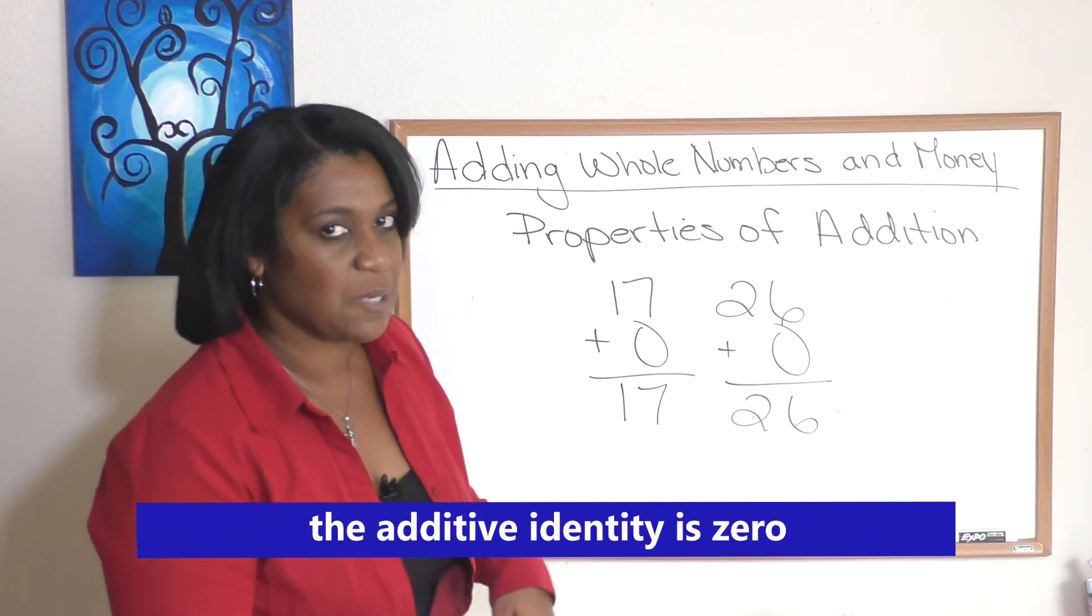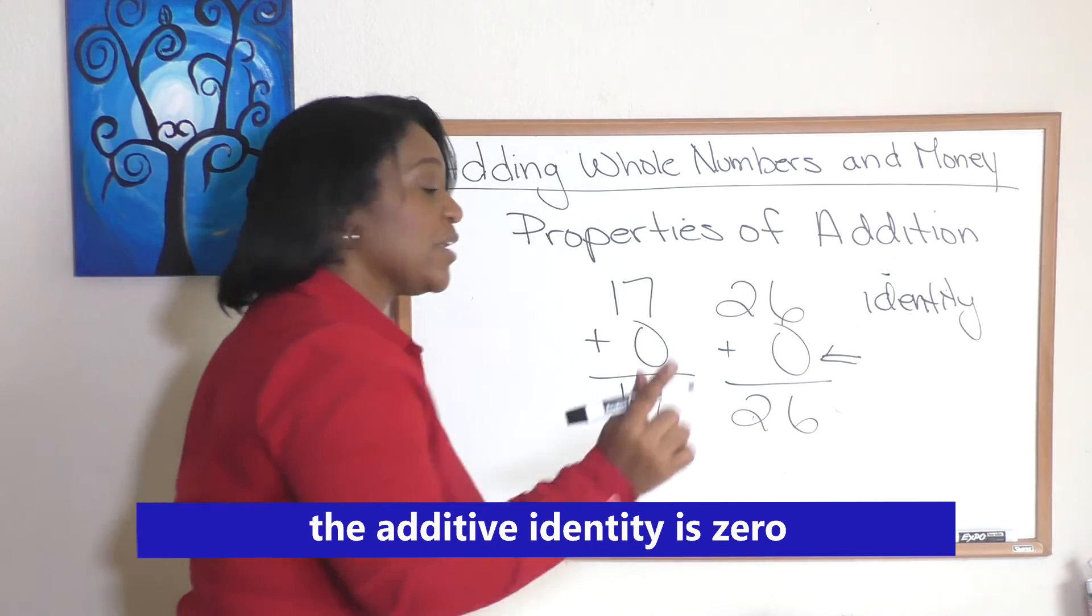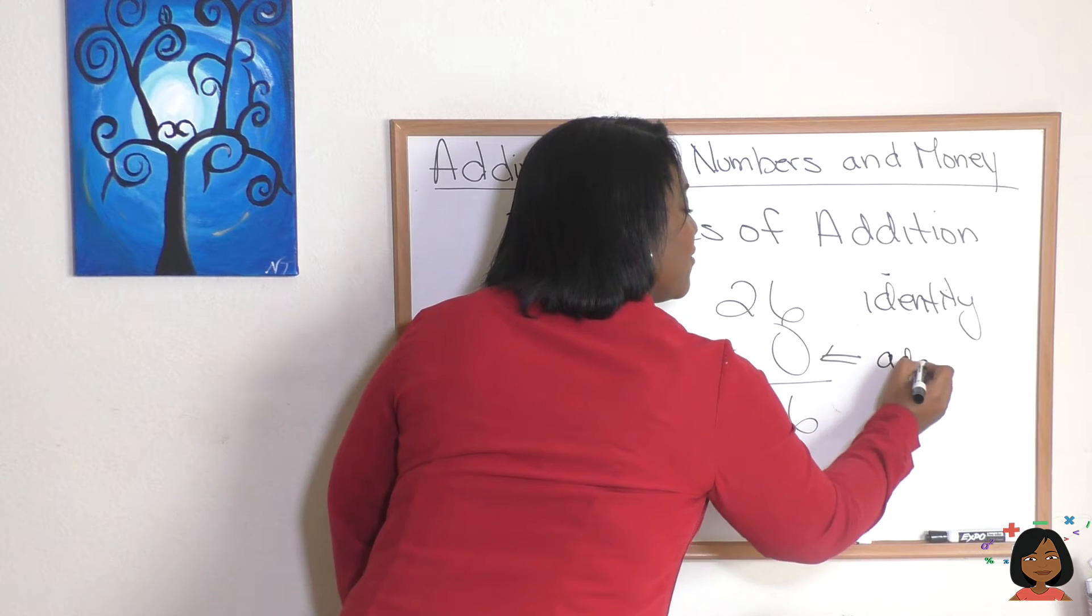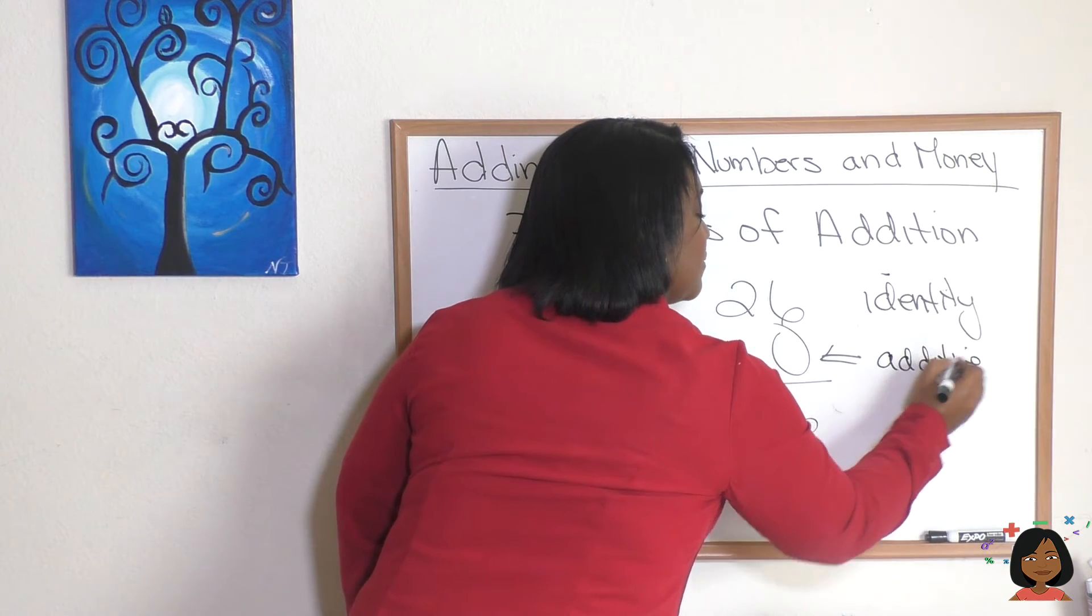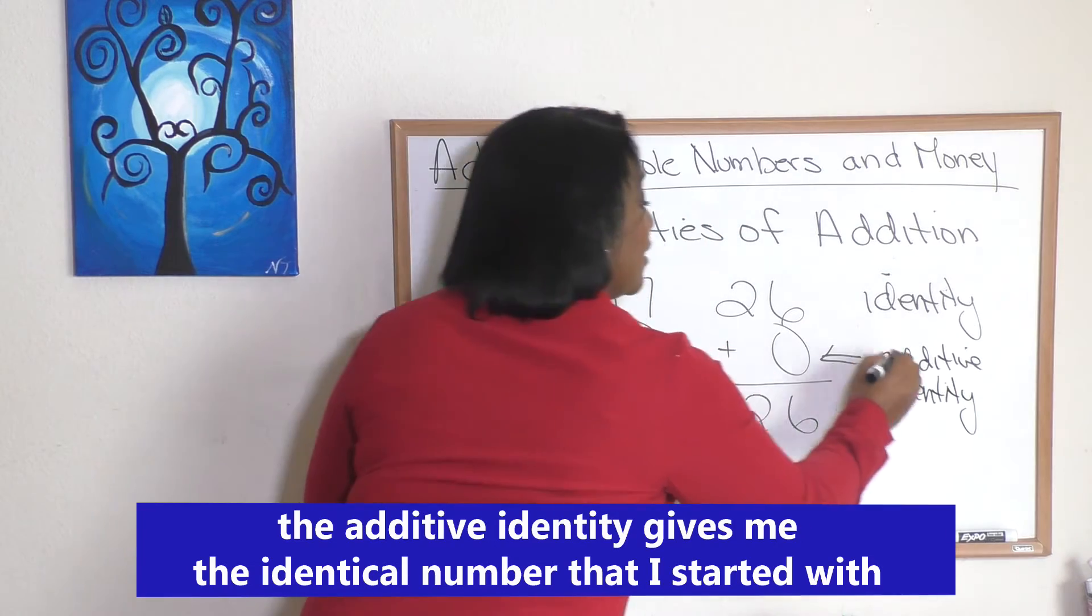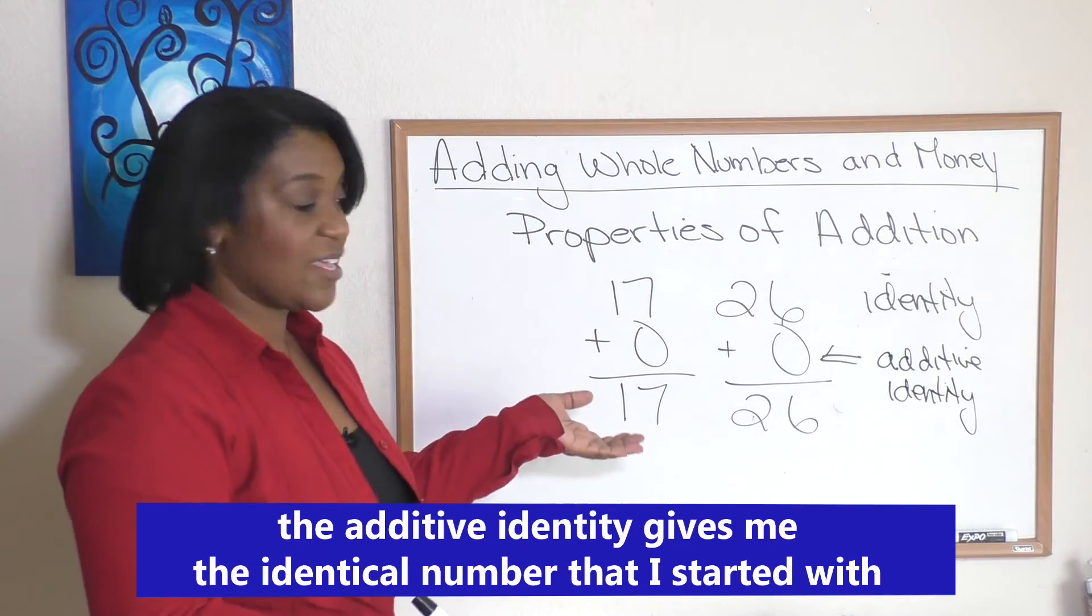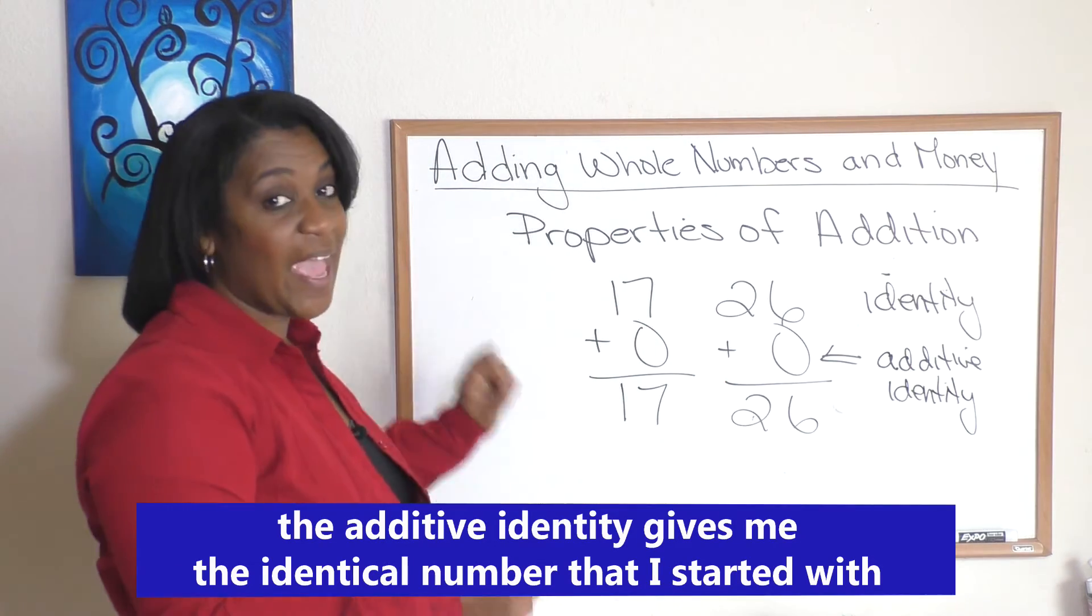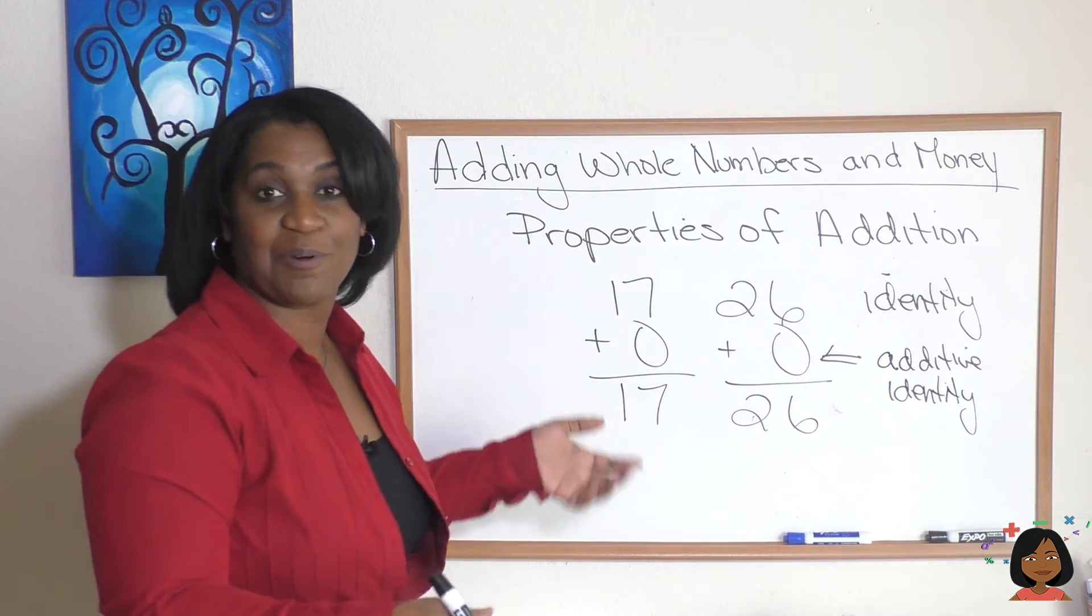And zero is called the additive identity, since it's zero that gives us this special condition where we end up with the identical number we started with.